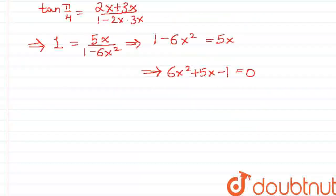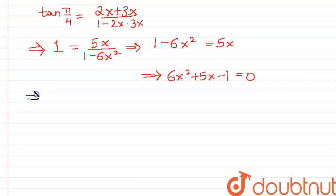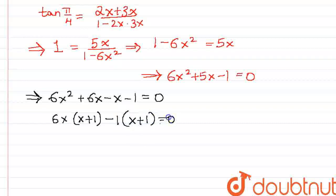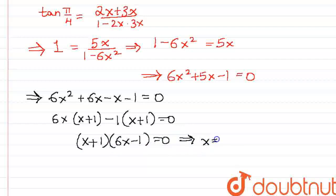We can solve for x from this polynomial. 6x squared plus 6x minus x will lead to 5x minus 1 is equal to 0. Taking 6x common, we are left with x plus 1. Taking negative 1 common, we have x plus 1 again. And thus, x plus 1 times 6x minus 1 is equal to 0. That is, x is equal to negative 1 or x is equal to 1 sixth.